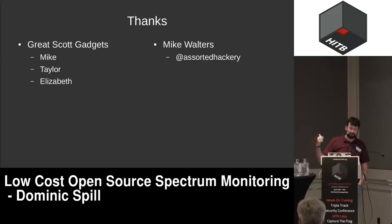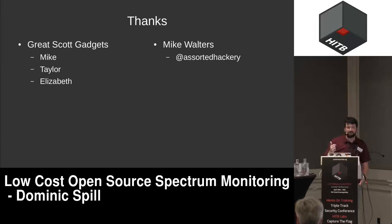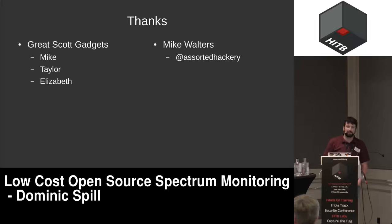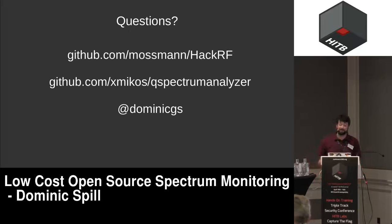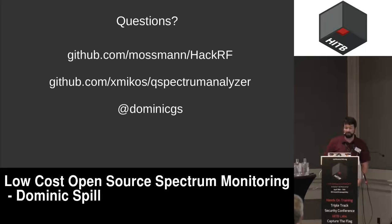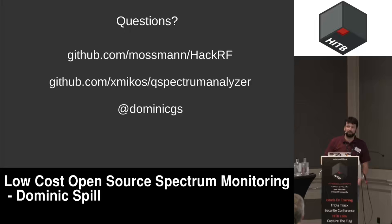I'd like to thank everyone at Great Scott Gadgets. Thanks to Mike Taylor and Elizabeth. Also Mike Walters, who originally came up with some of the concept for HackRF Sweep — he had a really cool project at EMF Camp last year where he plotted the six gigahertz of bandwidth using UV lasers on glow-in-the-dark material, getting that onion-skin fading effect naturally. The two most useful URLs are HackRF, where our firmware changes are, and Q-Spectrum Analyzer. If you want to use Heatmap with HackRF Sweep, you currently need a modified version, but we're hoping to push that pull request upstream this week.